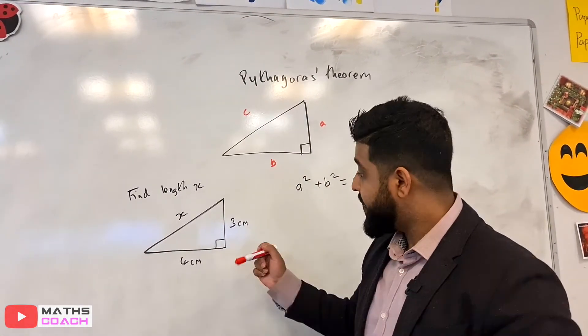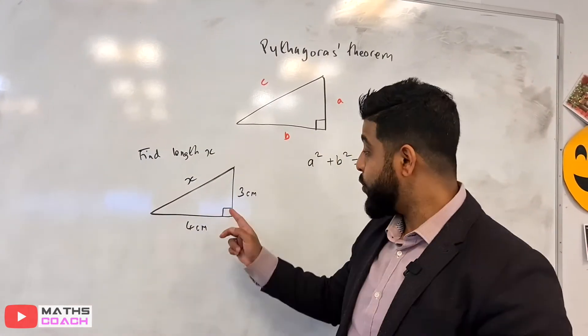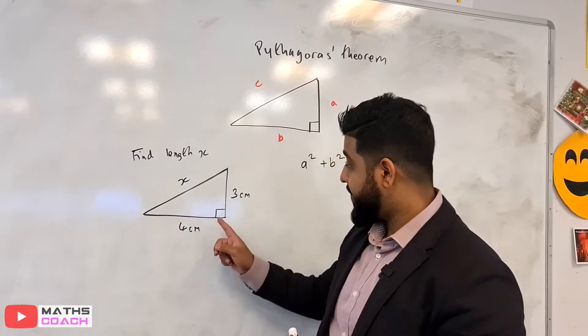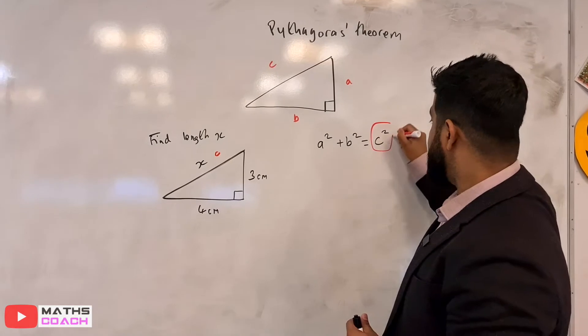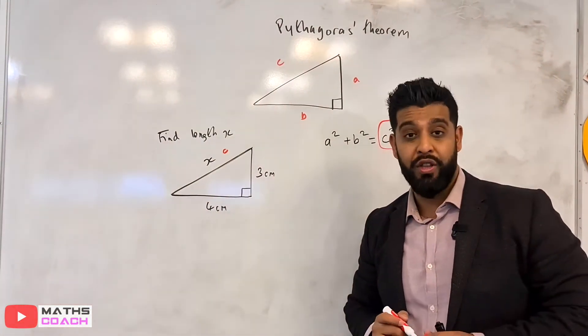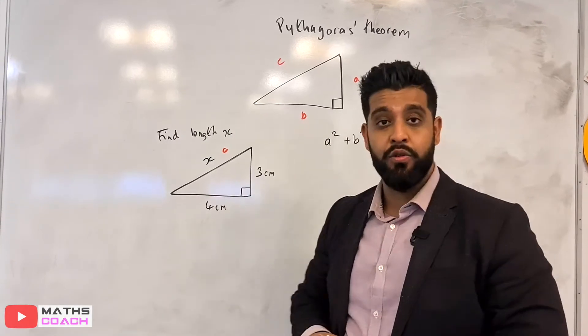Which means we need to find this length X. Now I told you earlier that the hypotenuse, the longest side of a right-angled triangle, is always opposite the right angle here. So we are going to call this C, because in our theorem, C is always reserved for the hypotenuse. And A and B, which we've done earlier, can be any of these two sides.